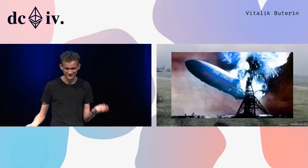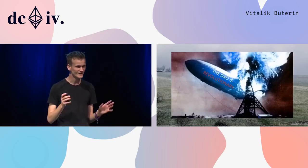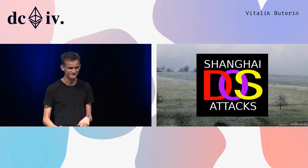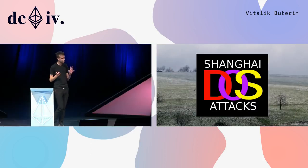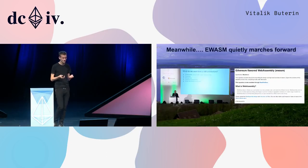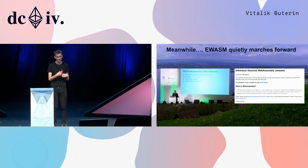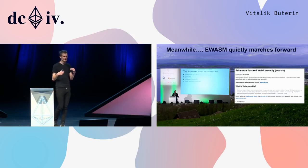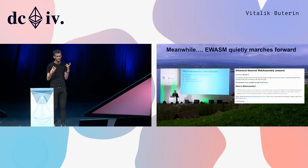Then the DAO hack and the DOS attacks happened. All of that ended up delaying a lot of people's time and attention by potentially up to six months. But even still, work moved forward — work on the virtual machine moved forward, work on alternatives like EVM 1.5 moved forward, and people were still continuing to get a better and better idea of what a more optimal blockchain algorithm would look like from many different angles.